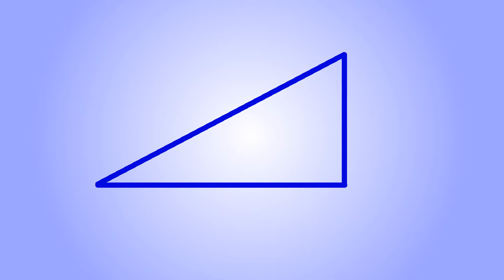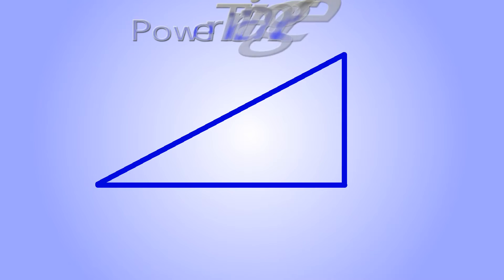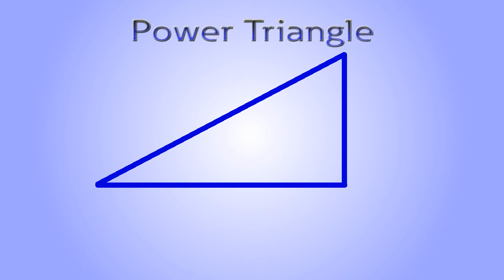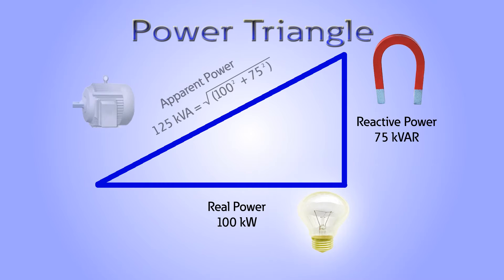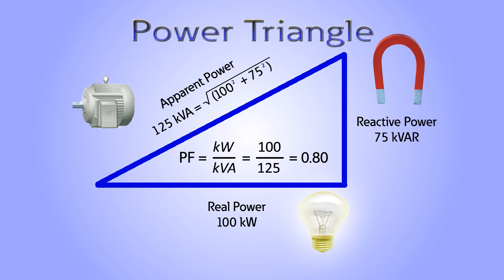Let us take a closer look at this. This is a diagram of the power triangle. It shows the relation between KW, KVAR, KVA, and finally, power factor. Apparent power is measured in KVA. Power factor is the ratio of real power and apparent power.